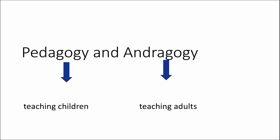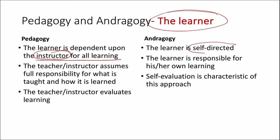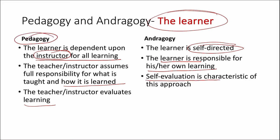Next, we move on to the differences between pedagogy and andragogy. As the name indicates, pedagogy is for teaching children and andragogy is for teaching adults. The basic difference when it comes to the learner aspect: in pedagogy, the learner is dependent upon the instructor for everything — it is instructor-centered. Whereas andragogy is self-directed. The teacher or instructor assumes full responsibility for what is taught and how it is learned in pedagogy. The learner is responsible for their own learning in andragogy. The teacher evaluates learning in pedagogy whereas self-evaluation is characteristic in andragogy.